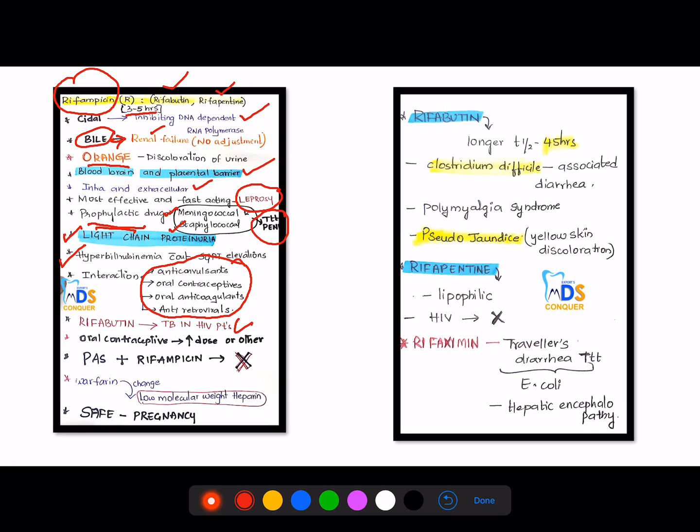And remember this is a very important point that rifabutin can be used in tuberculosis patients with HIV. That means in HIV patients with tuberculosis, rifabutin is used. And if a patient is on oral contraceptive plus rifampicin, you have to increase the dose of oral contraceptive or change to other modes of safety. And para-aminosalicylic acid plus rifampicin should not be used. And if patient is on warfarin, then you have to ask the patient to change to a low molecular weight heparin if a patient is taking rifampicin.